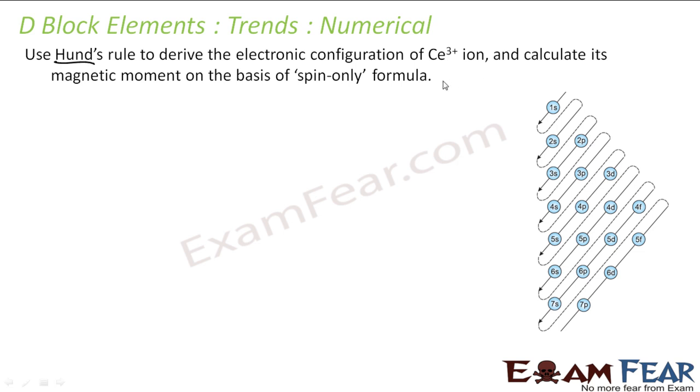The next is using Hund's rule, derive the electronic configuration of Ce3+. First let's derive for Ce, atomic number is 58. So for that let's start. We can take help of the chart.